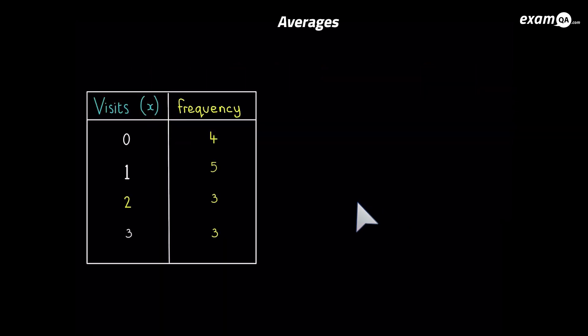So let's work out the mode and the median from a frequency table. So here we've got a frequency table. Now it's the number of times a sample of people visit the gym every month. So if you're not sure about what frequency table is, what it's saying is that four people visit the gym zero times. Five people visited the gym once a month and so on. And if you add up all these frequencies, you'll find out that 15 people are sampled.